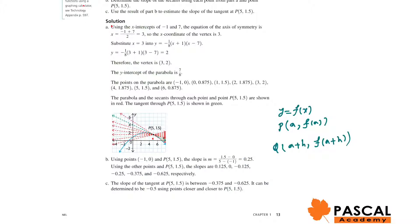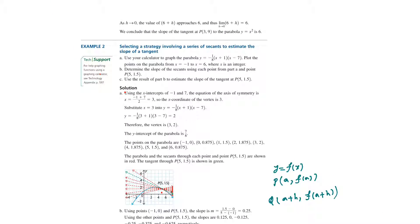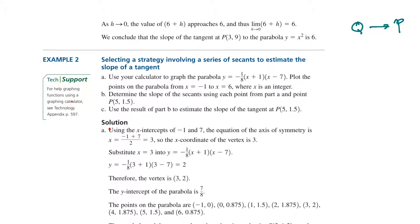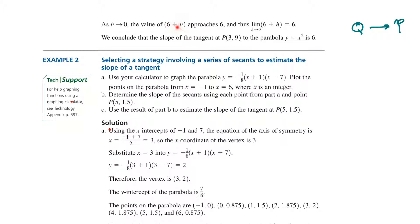Now, we say q should approach p, meaning h approaches 0. Therefore, the value of 6 plus h approaches 6. When h is getting close to 0, 6 plus h is getting close to 6. This can be written as: limit of (6 plus h) as h approaches 0 equals 6. Therefore, the slope of the tangent line at p(3, 9) to the graph of y equals x² is 6.